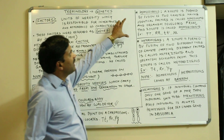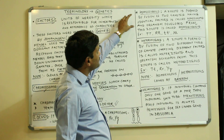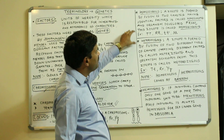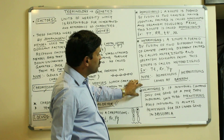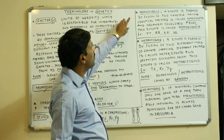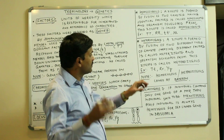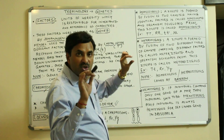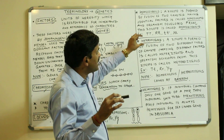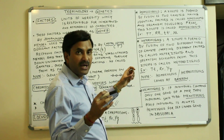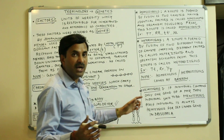Now there are a few more terms: homozygous condition, heterozygous condition, and hemizygous condition. 'Homo' means same, 'hetero' means different, 'hemi' means half, and 'zygous' refers to the zygote.